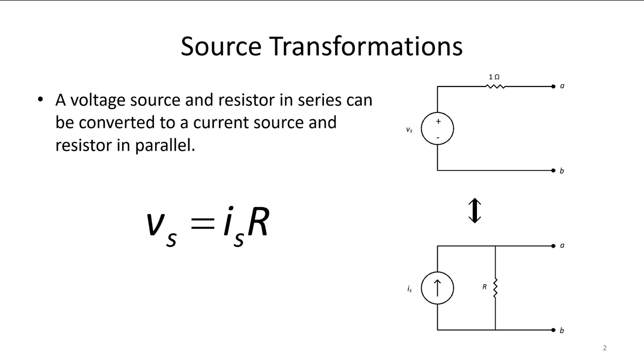We're going to convert back and forth between voltage sources and current sources and use that technique to solve circuit problems. The connector between the two is that Vs equals Is times R. So the resistor value will always stay the same and then we'll convert the current and voltage sources to do the transformations.